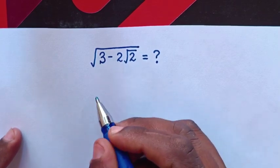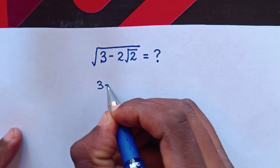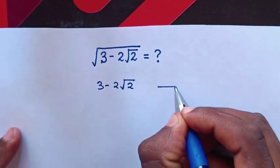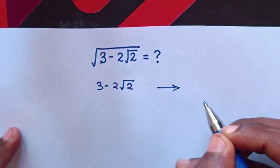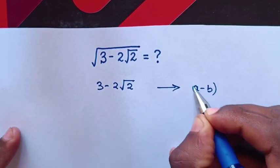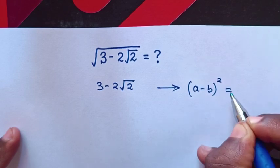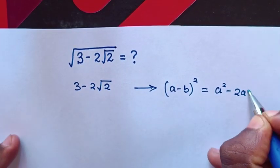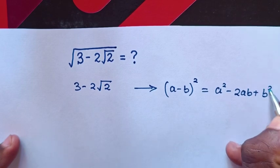First from this expression under the square root which is 3 minus 2 square root of 2, this expression represents a perfect square which is a minus b bracket square is equal to a square minus 2ab plus b square.